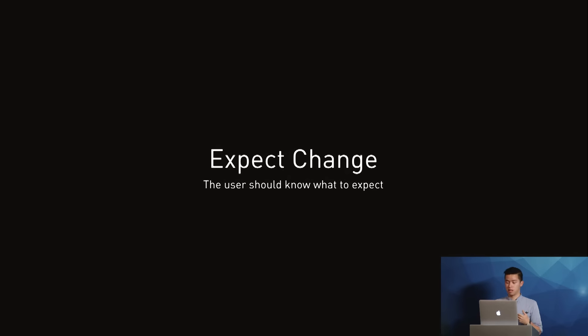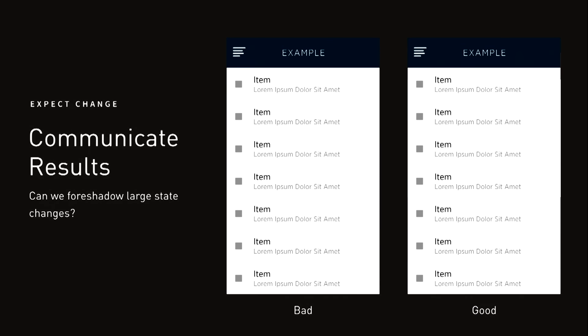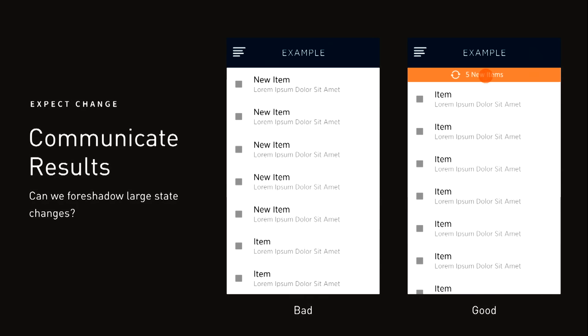The second principle is expect change. The product should communicate what will happen when a user acts. Surprises in a logical system are terrifying. Consider the mechanical precision of an automobile — surprises in that system are flat tires and engine smoke. Like a car, an app translates immense machine effort in a user-friendly manner. Unlike the car, the digital medium allows us to anticipate and inform users of change. Communicating results is one way to set expectations. When drastic state changes are possible, foreshadow the result of actions. A common mistake in the design of real-time systems is to render interfaces without notifying the user, leading to experiences that are unpredictable.